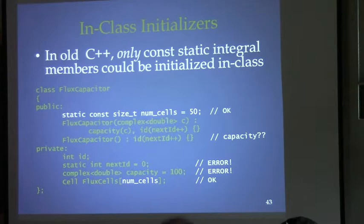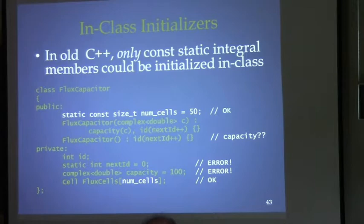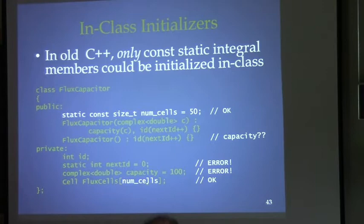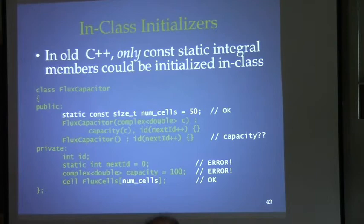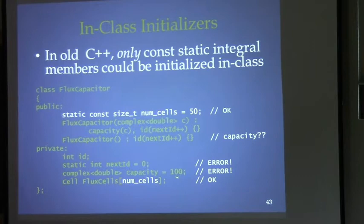Continuing with class design niceties. In old C++, the only time you could provide initialization of an instance or static variable in a class was if it was a `const static` integral data member — a special case so you could use it as an array dimension. Any other kind of initialization was not allowed: non-const statics couldn't be initialized in-class, and obviously instance variables couldn't be either — that's what constructors do.